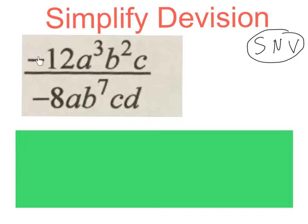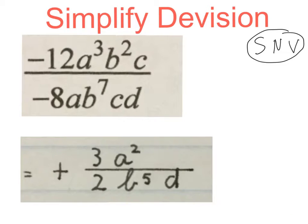This minus divided by a minus is going to give me a plus. Then I'm going to simplify the 8 and the 12, cancel the A's with each other, the B's with each other, the C's with each other. My final answer would look like this, and we get it by simplifying.